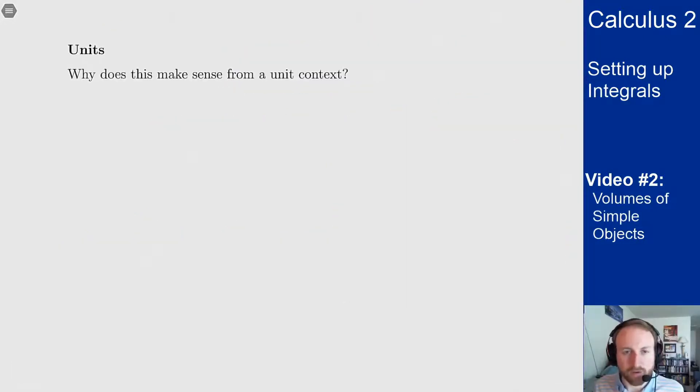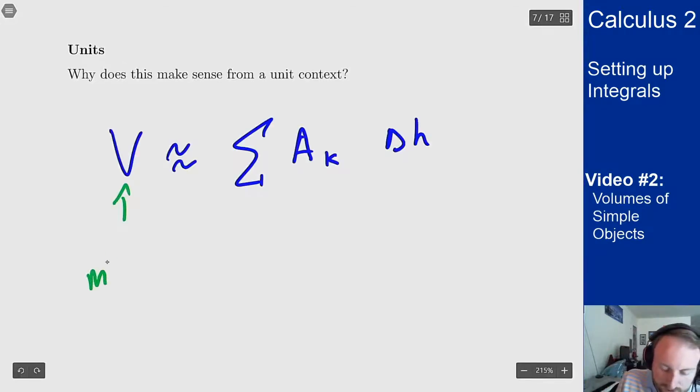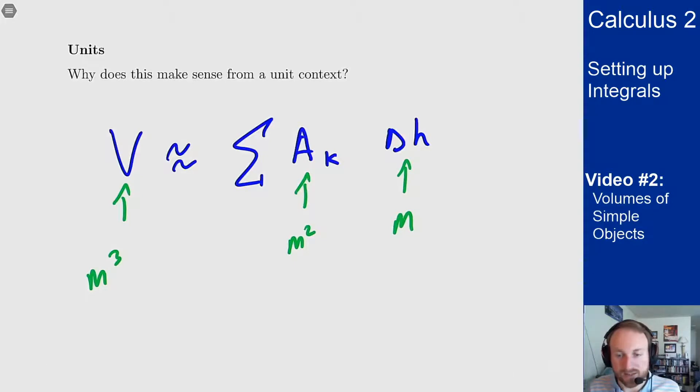And I mentioned before unit context, I'll mention it real quickly again. This makes sense because the area is a square unit, volume is a cubic unit, and my delta h gives me that last bit of length that I need. So this would be in say meters cubed, this is in meters squared, and this is in meters.